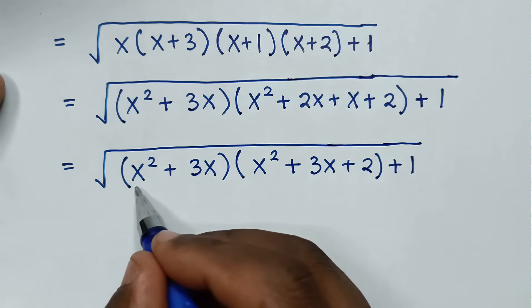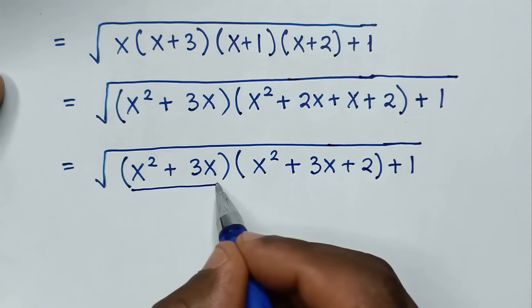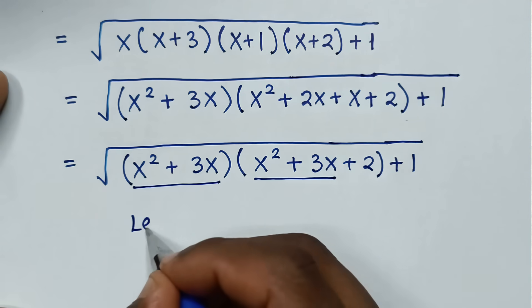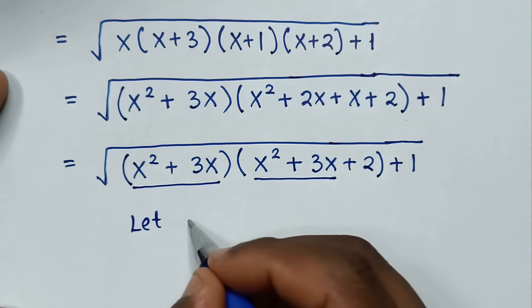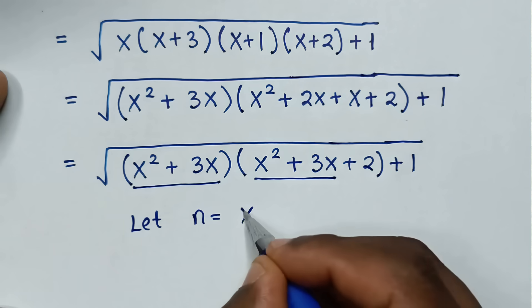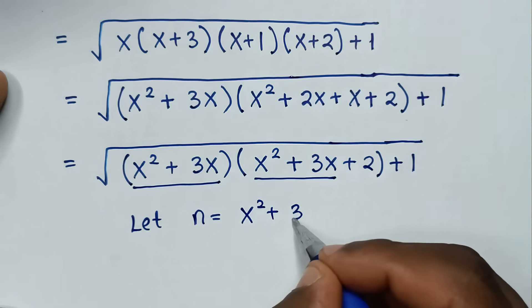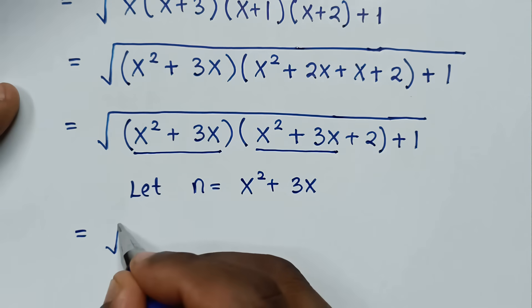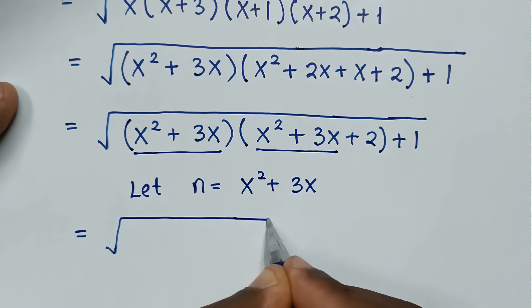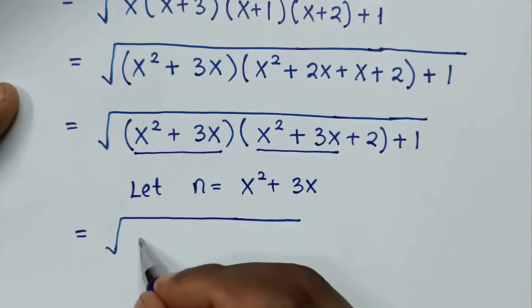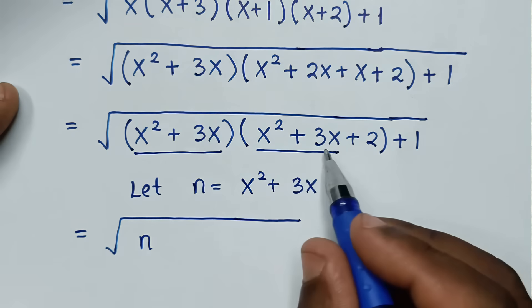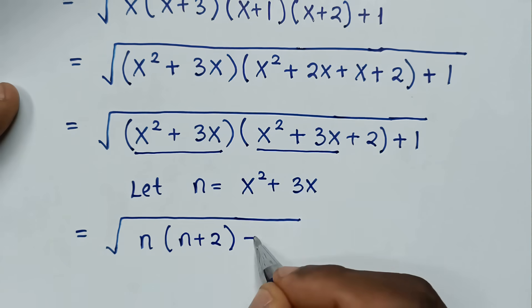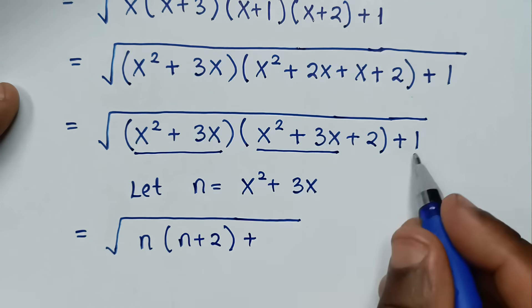Now x²+3x is common, so we let n equal to x²+3x. Then it will be equal to square root of n times (n+2) plus 1.